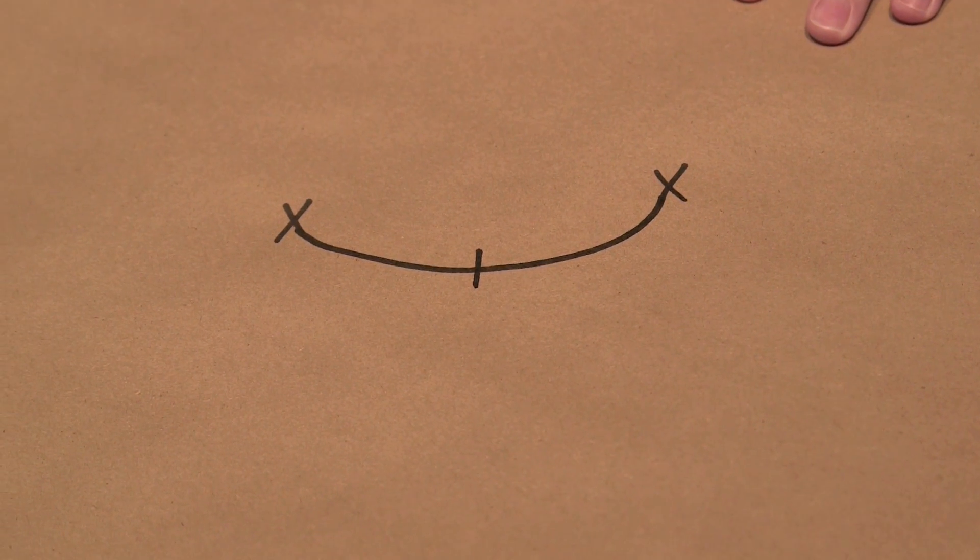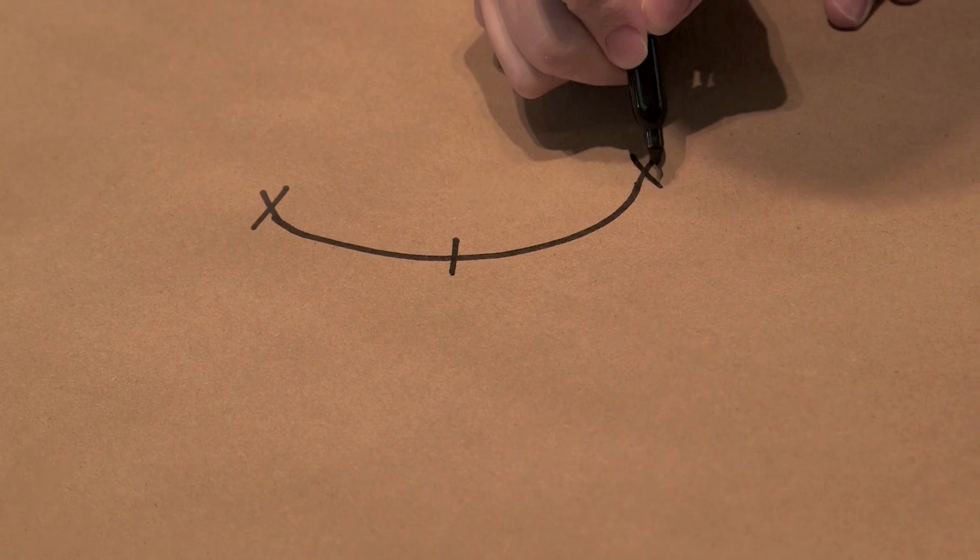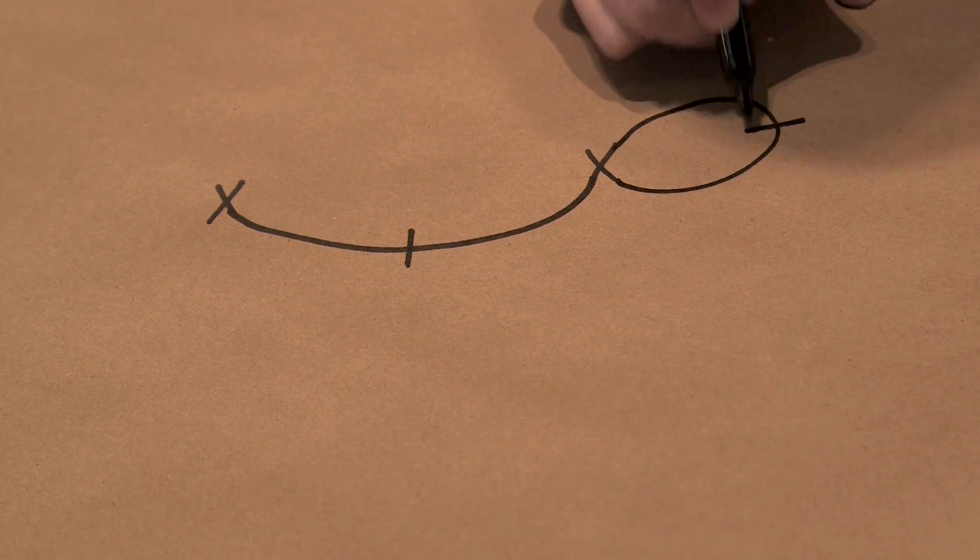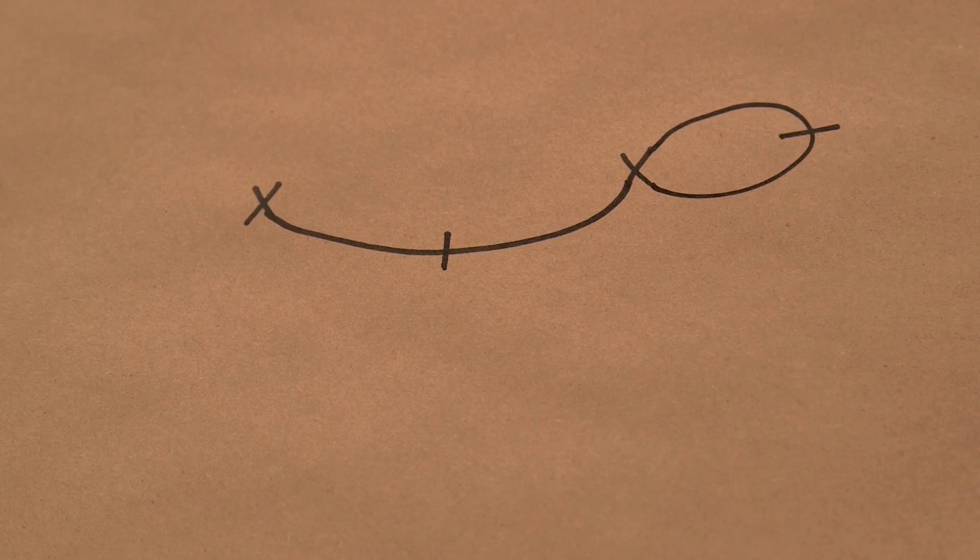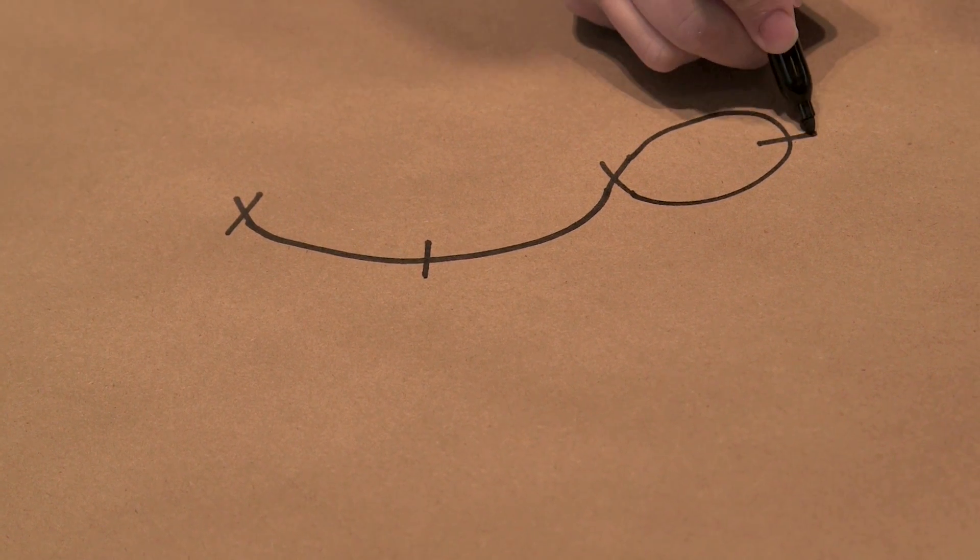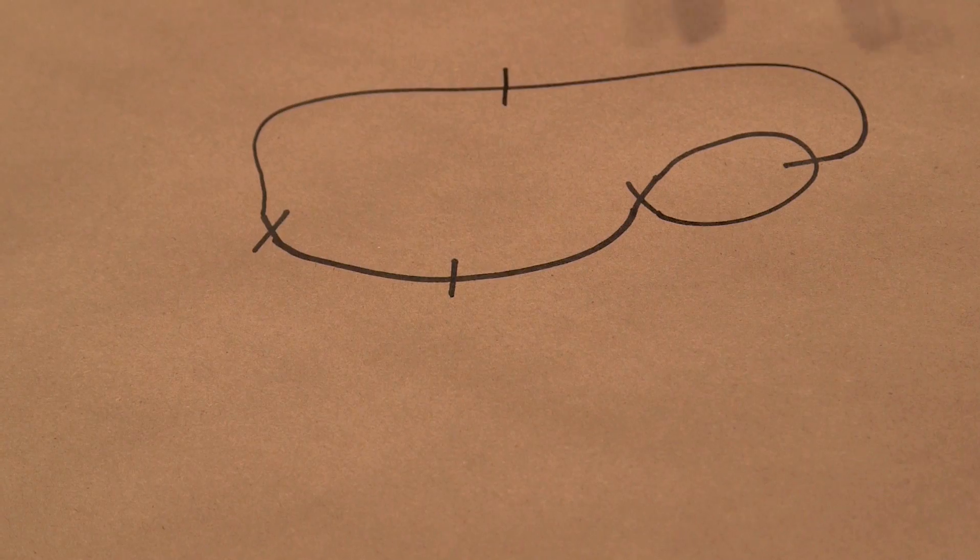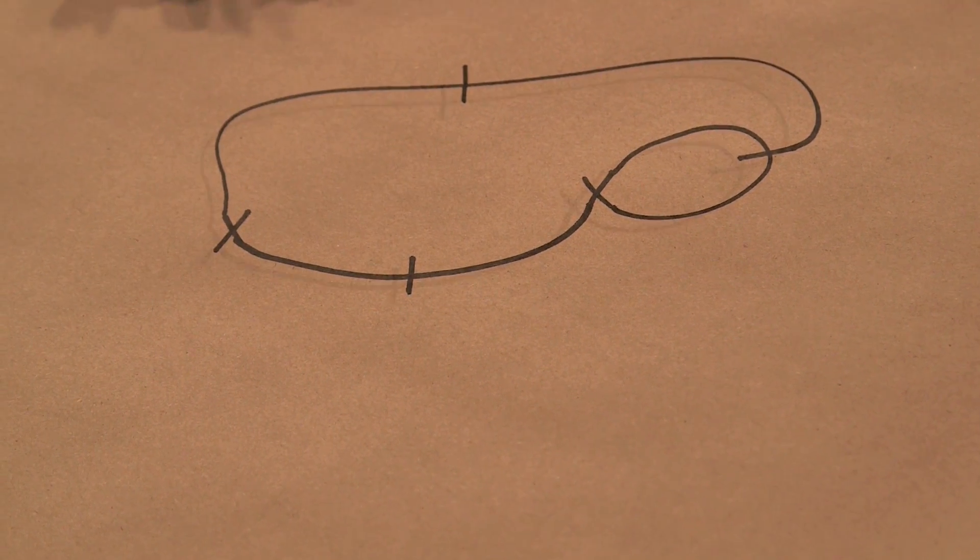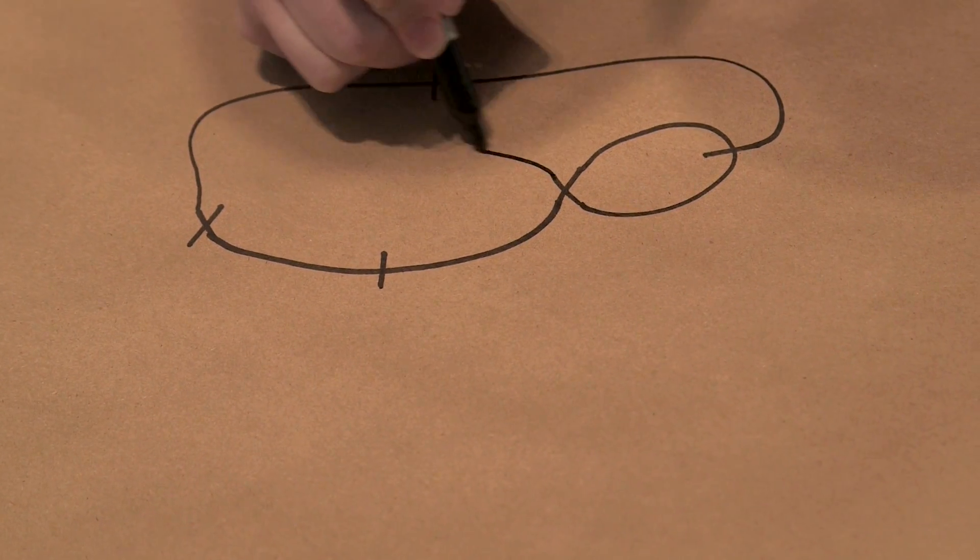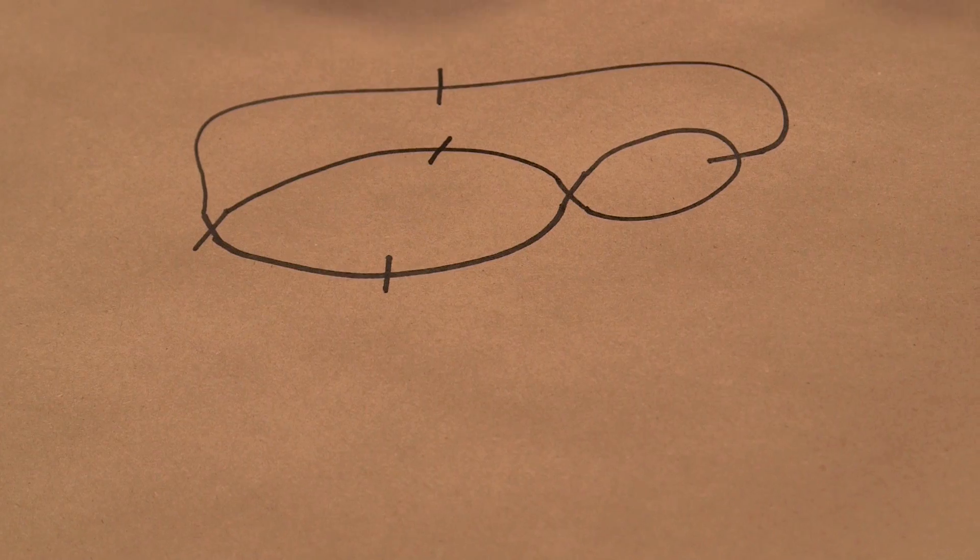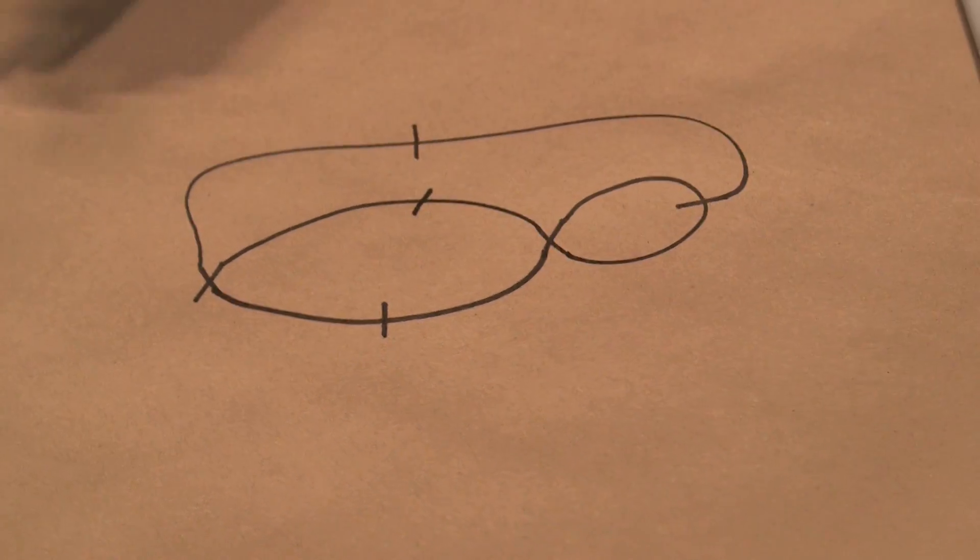So that would be one player's turn and then player two would go. Player two might connect to this end and this end and draw a slash through and then it'll be player one's turn again. Player one might do this. You can't draw through an edge that's already there so another turn might look like this and the game goes on like that alternating player one and player two. So the player that wins is going to be the last person that makes a legal move. So at some point if there's no more moves that you can make then the other player will win.